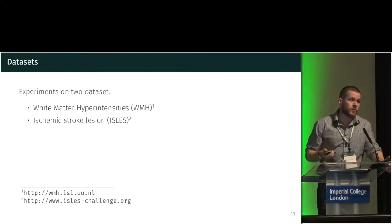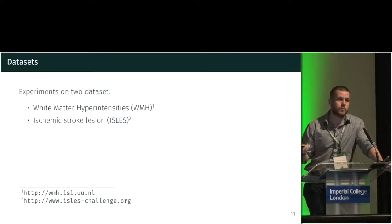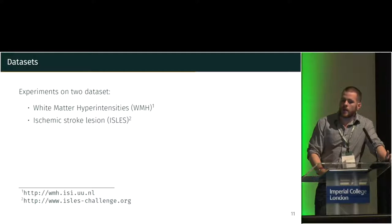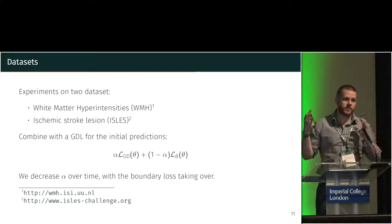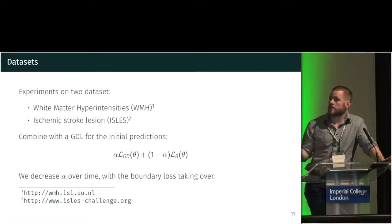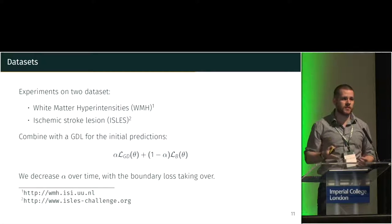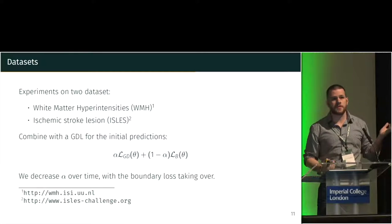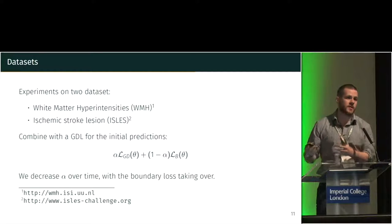We evaluated this formulation on two different datasets: WMHL and ISLES — and I want to thank the authors of WMHL for allowing us to use their dataset. Since the two boundaries need to be close for the formulation to work, we combined boundary loss with another loss — generalized dice loss — that helps to initially localize the object. By decreasing alpha over time, we shift the weight from generalized dice loss to boundary loss. The generalized dice loss kickstarts the learning process to find where the object is, and then the boundary loss helps to refine the segmentation and the boundary around it.